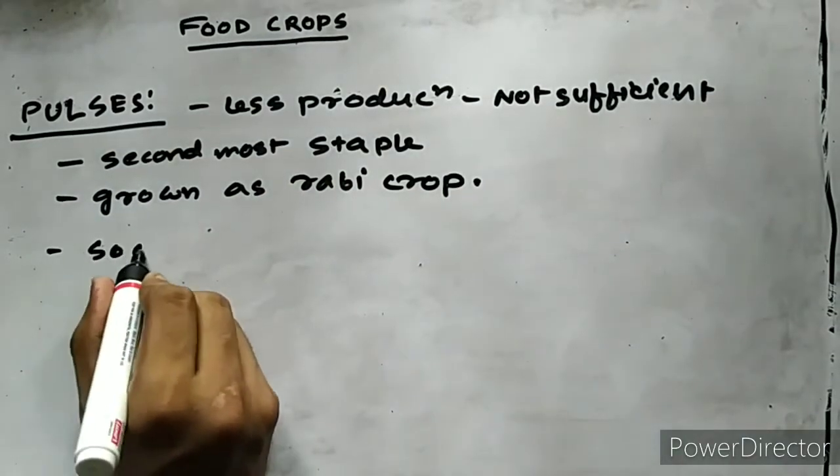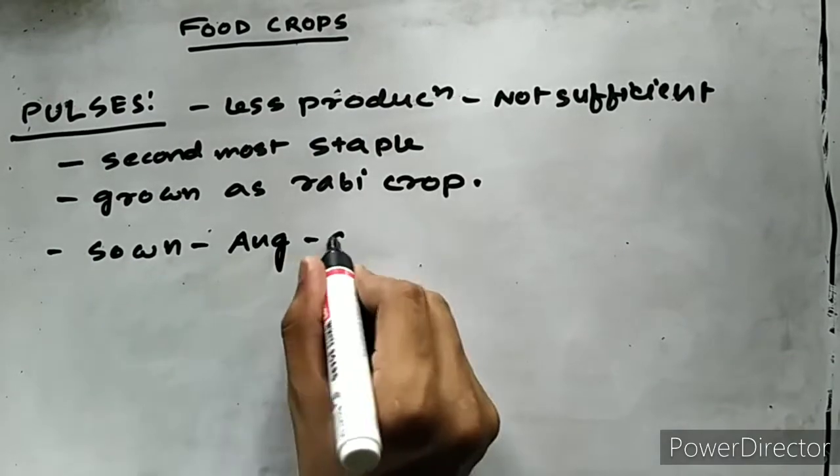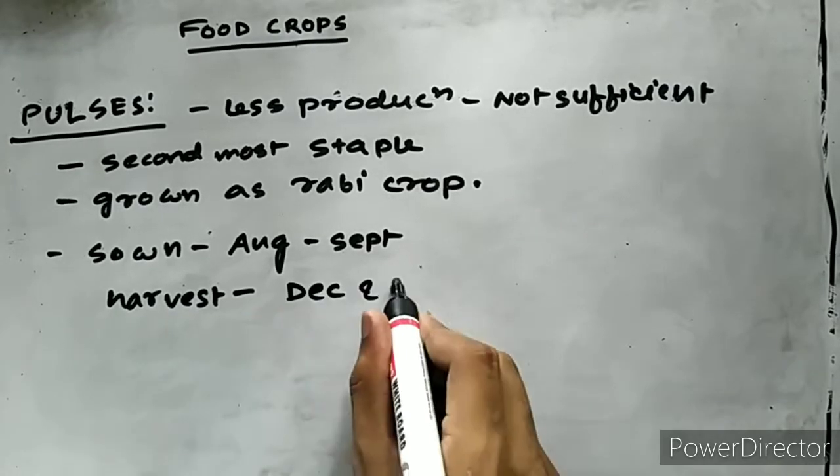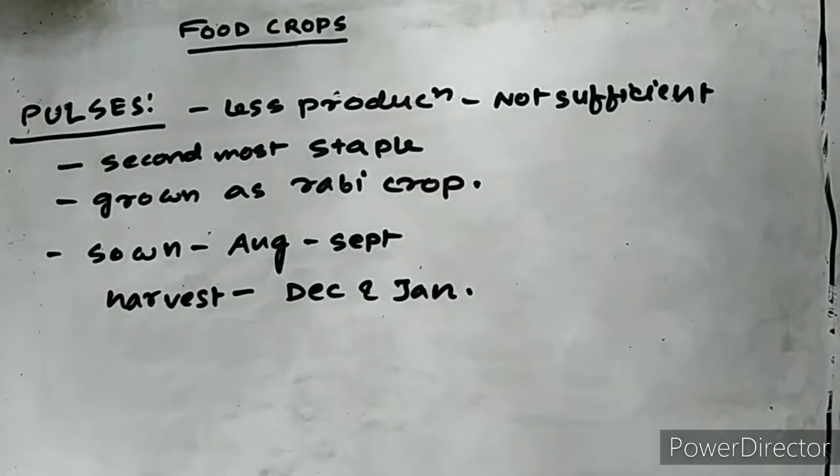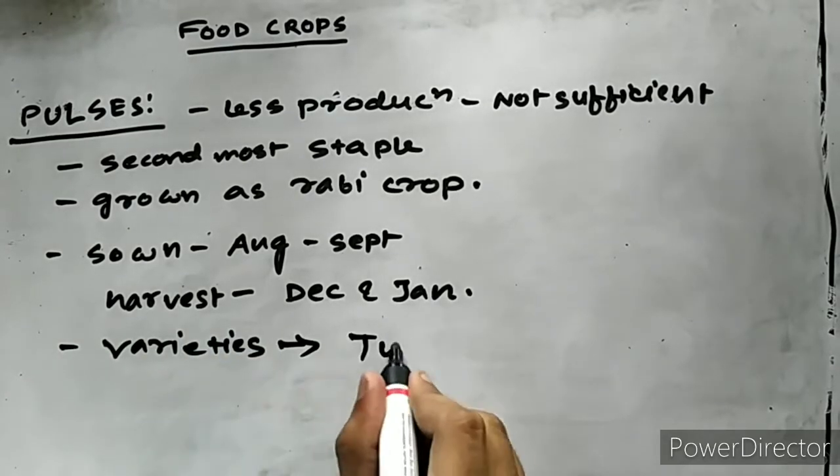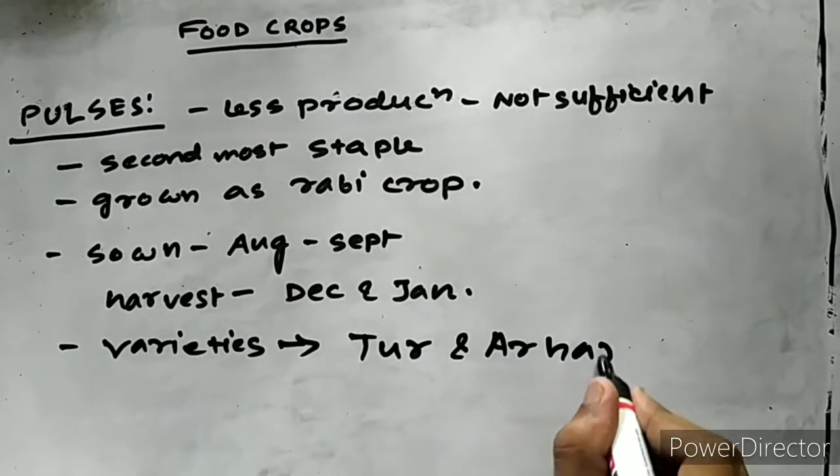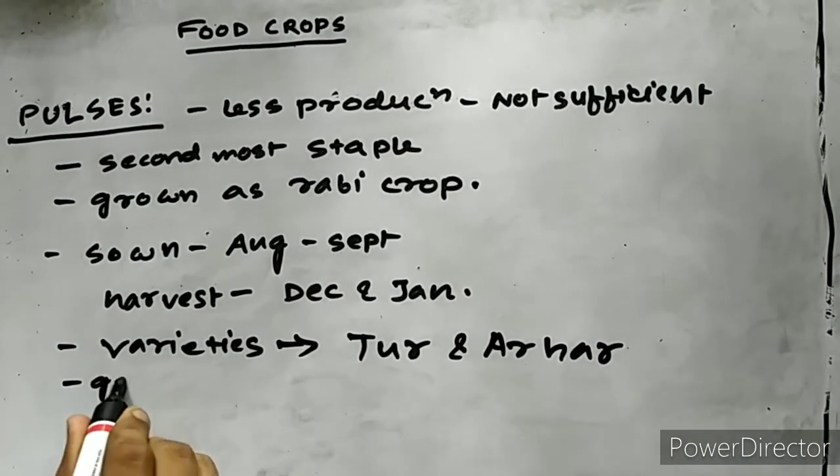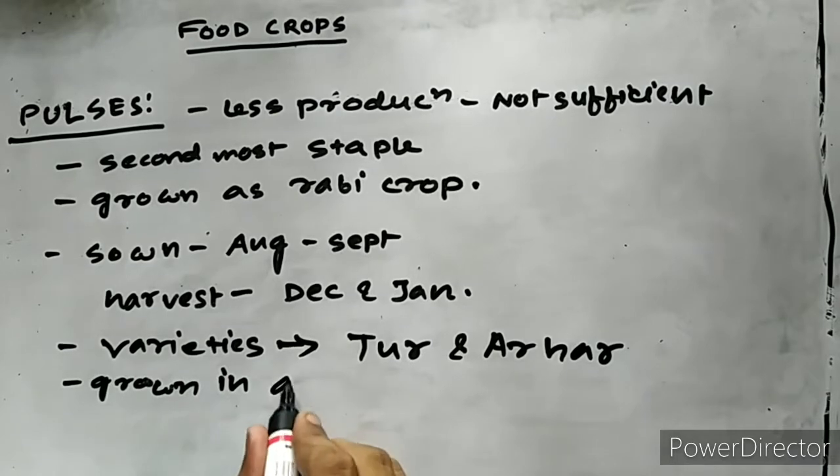It is sown in August to September and harvested in December to January. The common varieties grown in Assam are the Tur or Arhar, which is also called Pigeon Pea, or the red gram. Some amount of Arhar is also grown in the areas inhabited by the tea garden laborers.